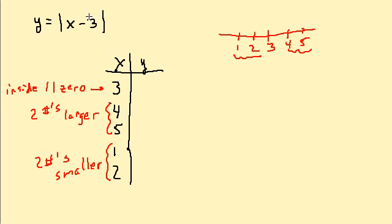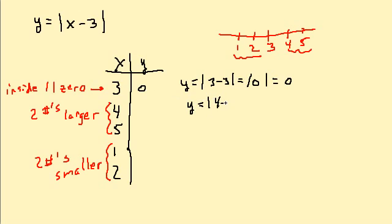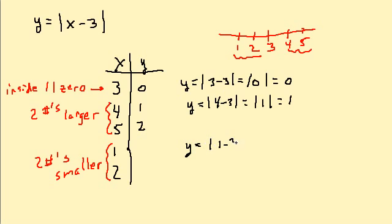Now we plug these numbers into our function. For x equals 3: y equals the absolute value of 3 minus 3, which is the absolute value of 0, which equals 0. For x equals 4: y equals the absolute value of 4 minus 3, which equals 1. For x equals 5 we get 2. For x equals 1: y equals the absolute value of 1 minus 3, which equals the absolute value of negative 2, which is positive 2. And for x equals 2 we get 1.